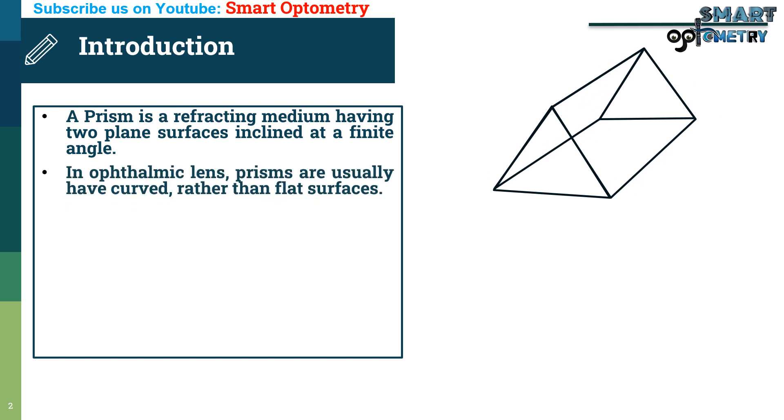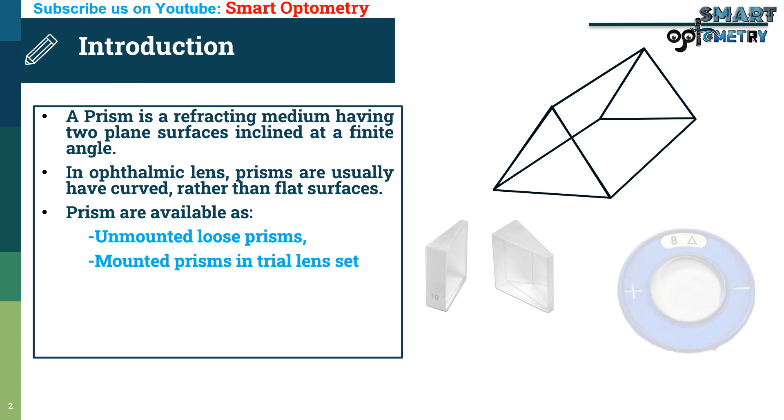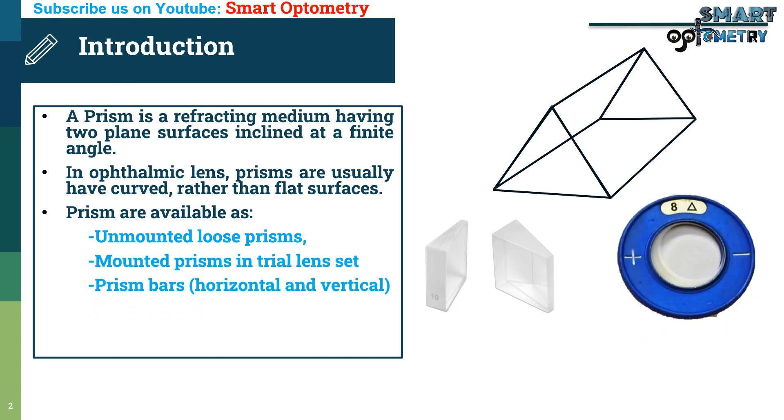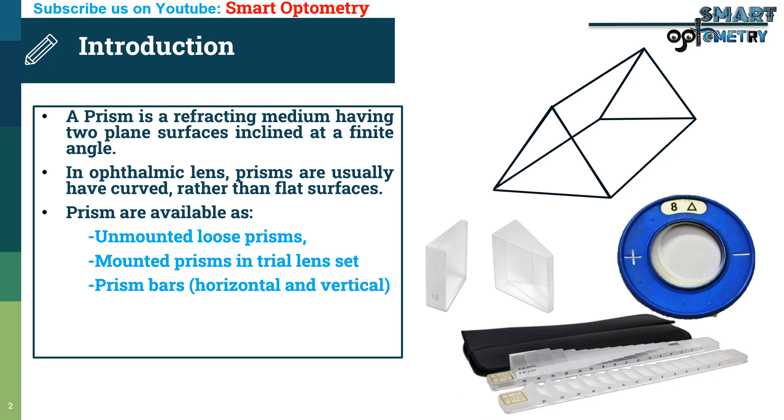In ophthalmic lens, prisms usually have curved rather than flat surfaces. Prisms are available as unmounted loose prisms, mounted prisms in trial lens set, and prism bars that are available as horizontal and vertical prism bars. Prism may be used in conjunction with spherical, cylindrical, or sphero cylindrical power.